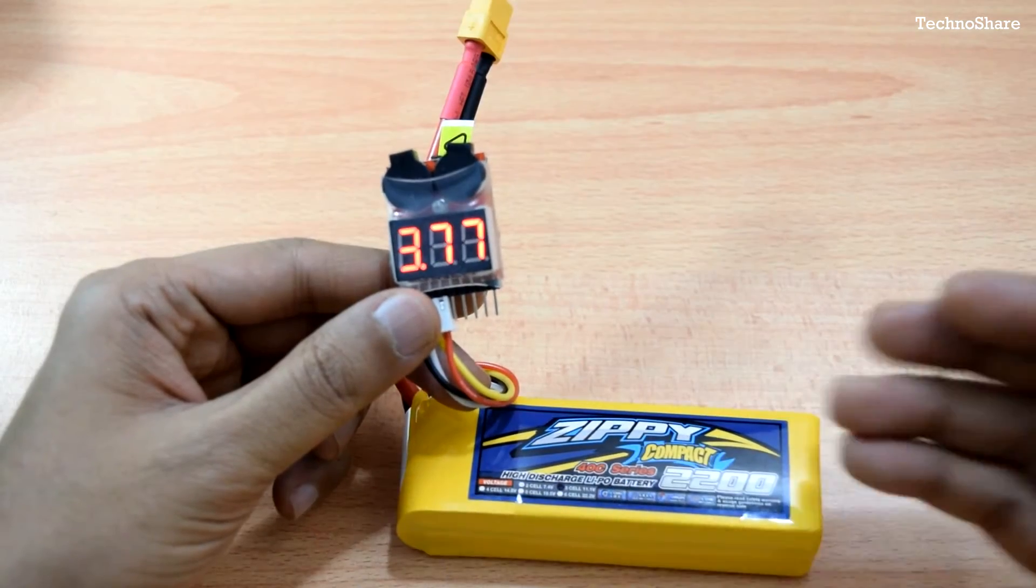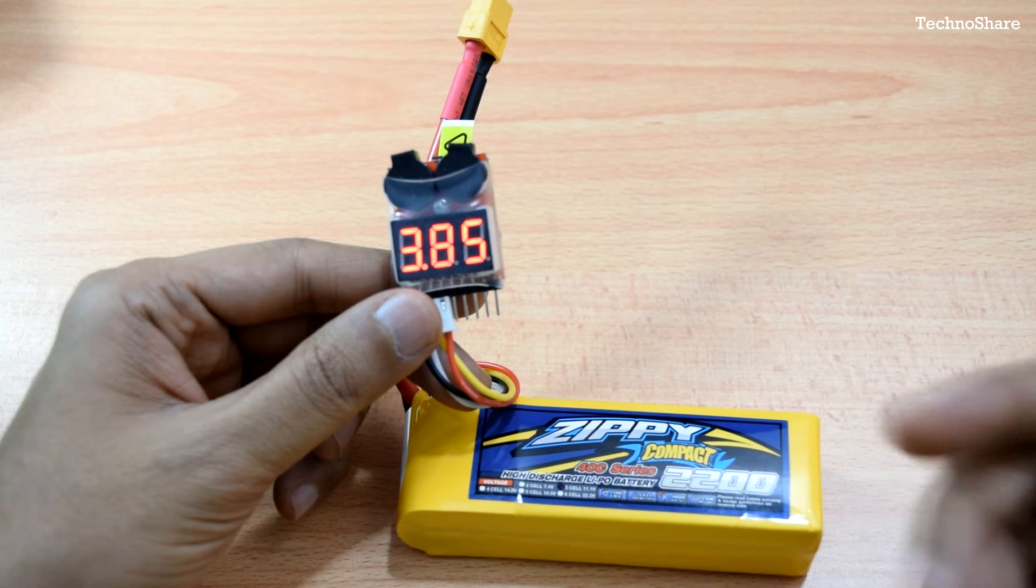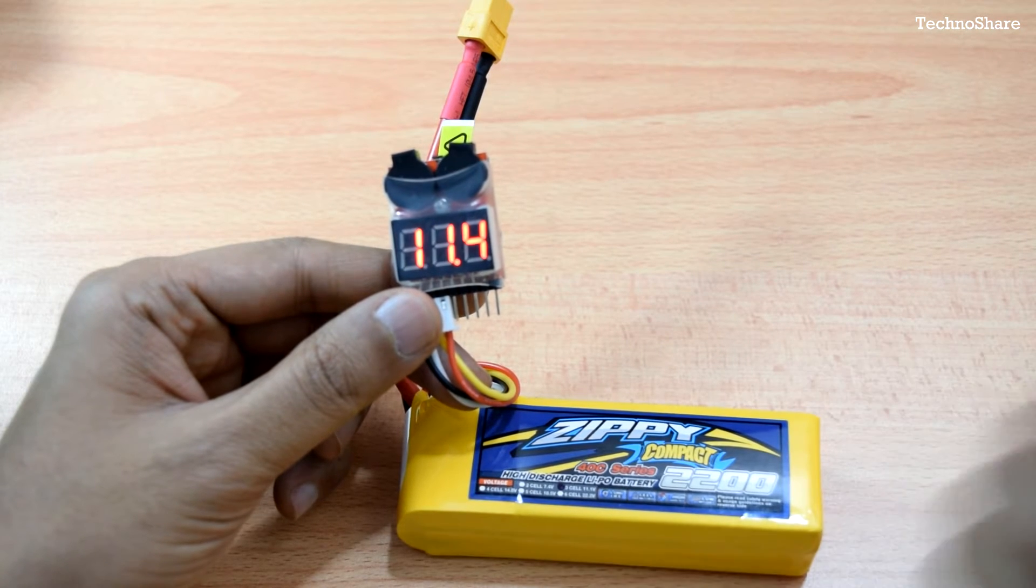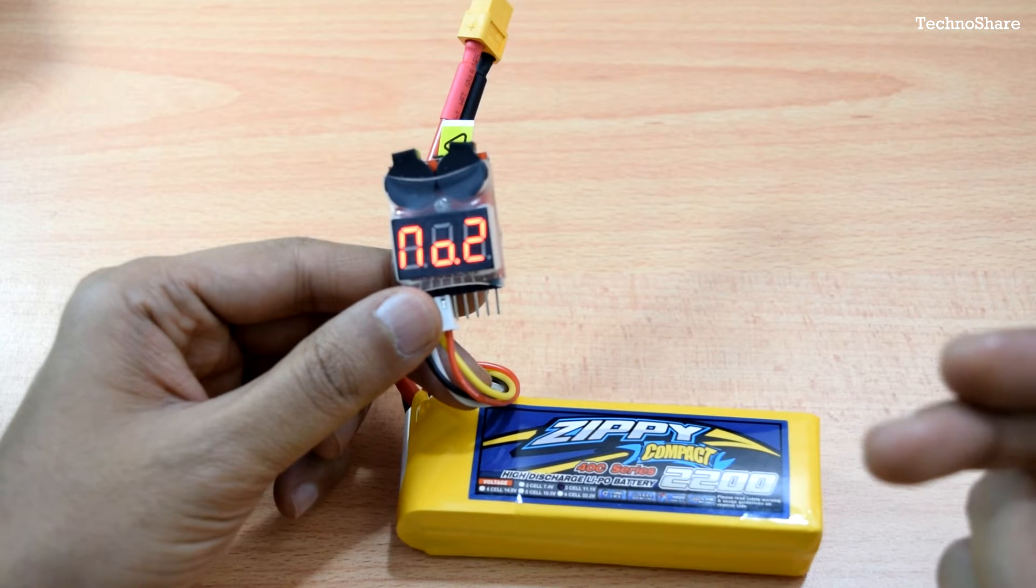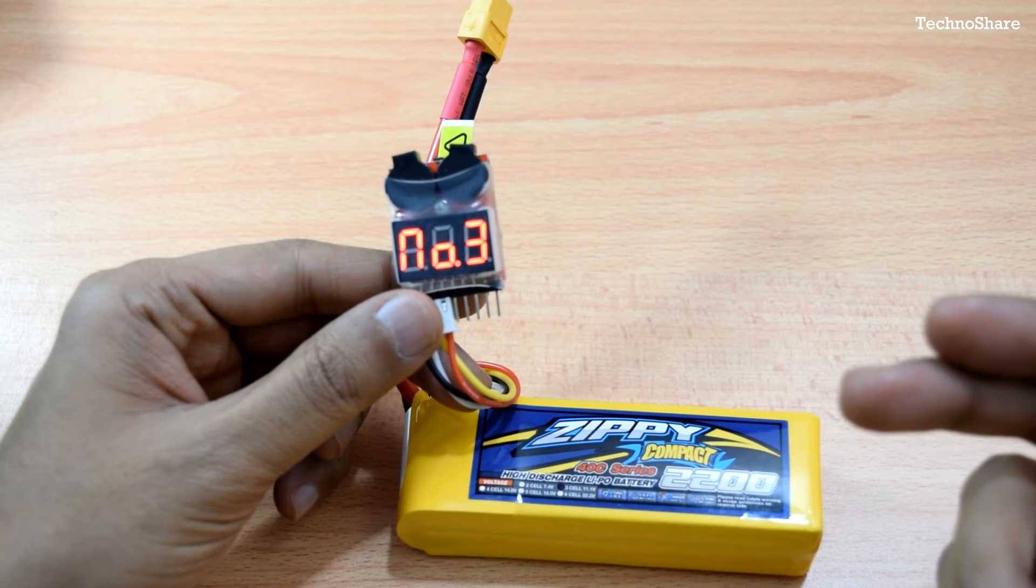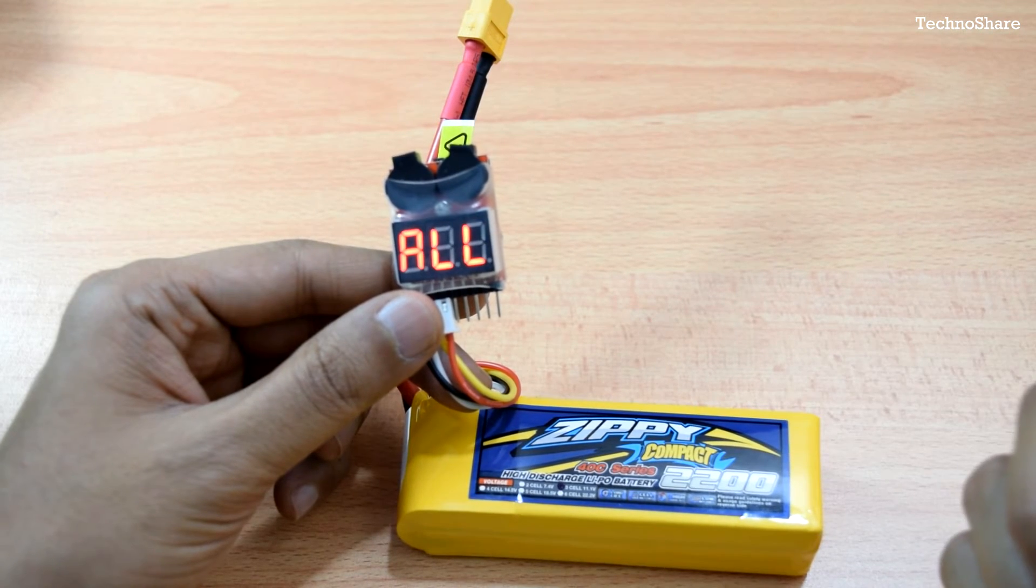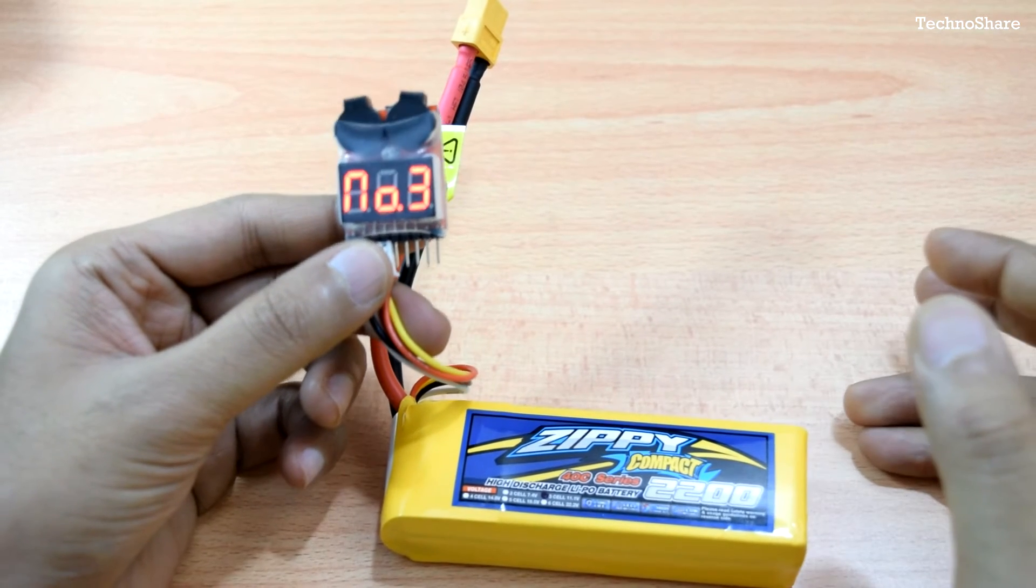As you can see it shows a total voltage of around 11.4 volts and the first cell is having 3.83. The second around 3.77 and the third cell around 3.85 volts.